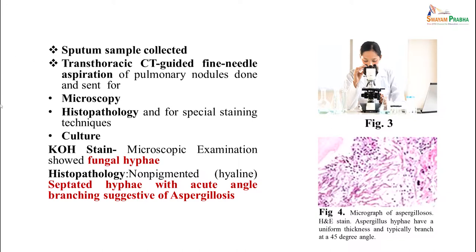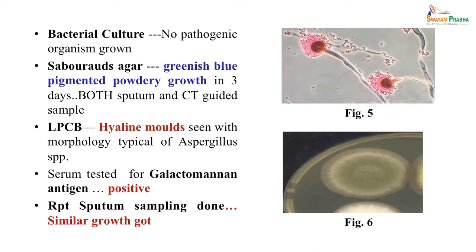Histopathology also showed septate hyphae with acute angle branching under the microscope. Bacterial culture showed no organism growth. On Sabouraud's dextrose agar, the fungal medium showed a greenish-blue pigmented powdery growth within 3 days, and both sputum and CT-guided samples grew the same organism. Lactophenol cotton blue mount showed Aspergillus-like structures with sporangia and spores around them, seen on both samples.